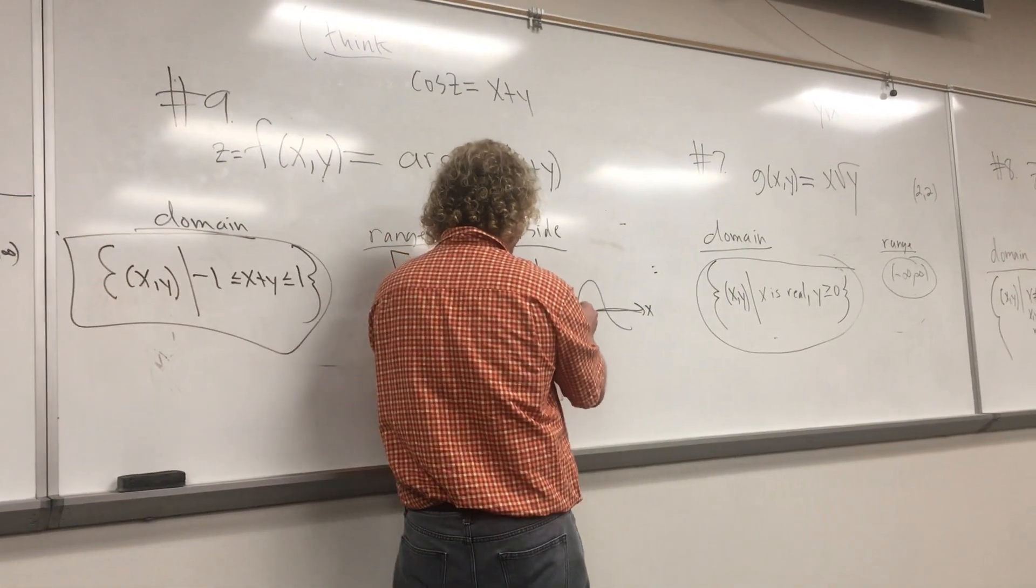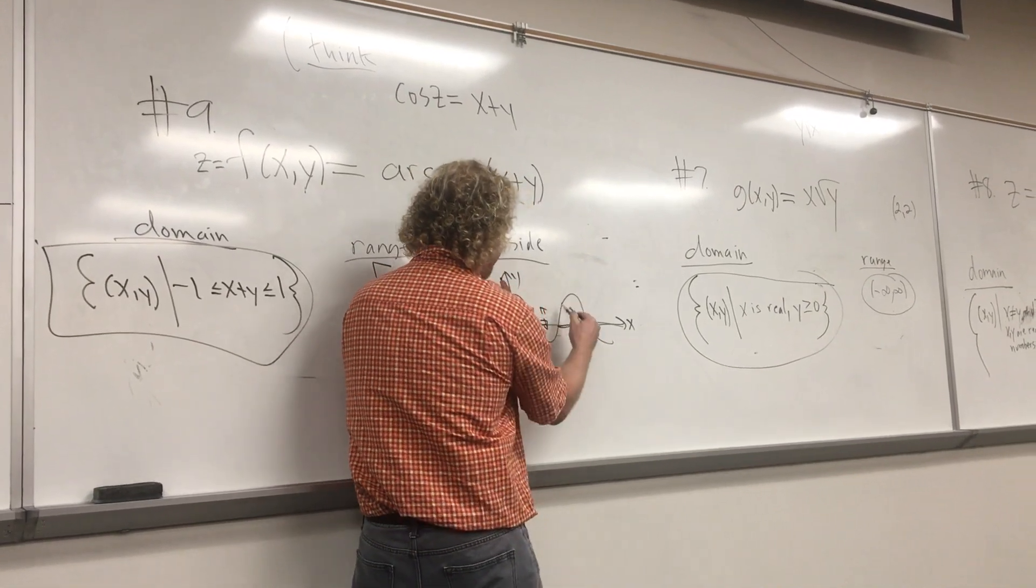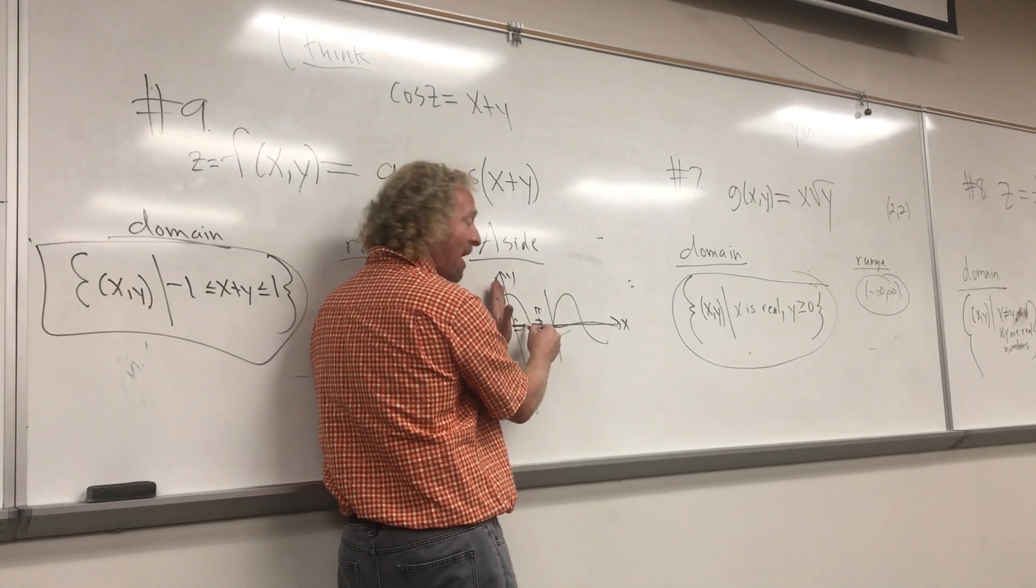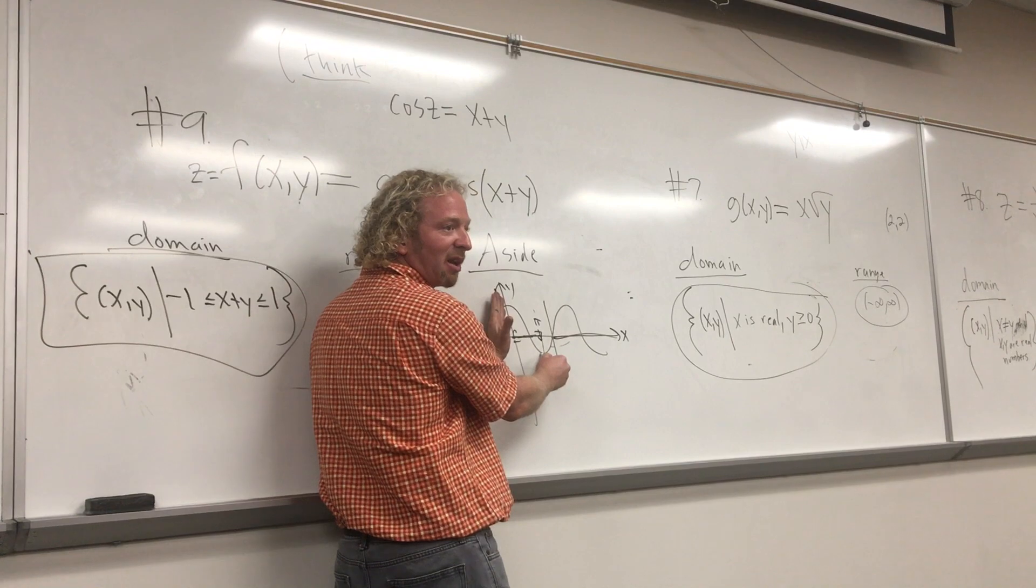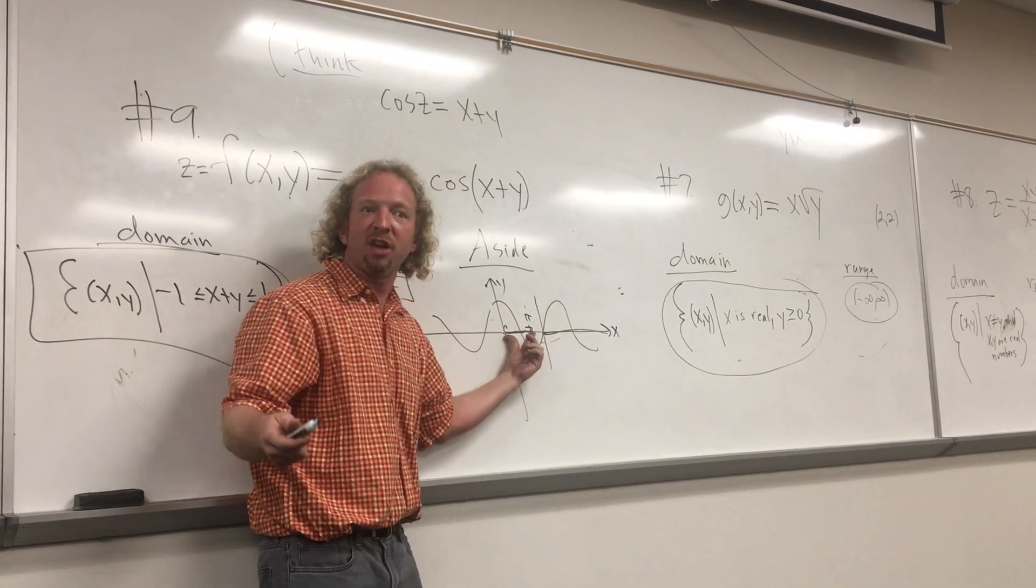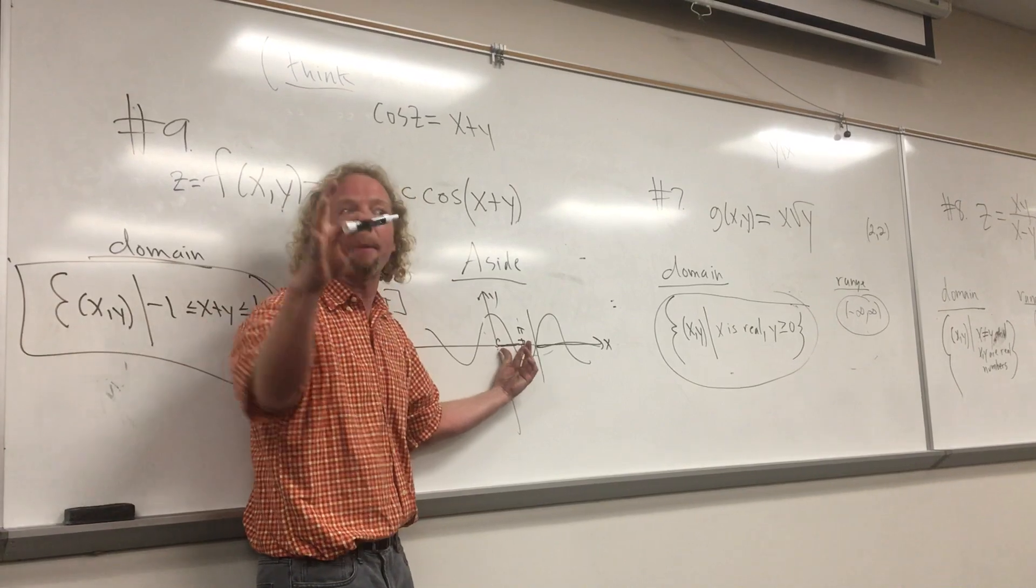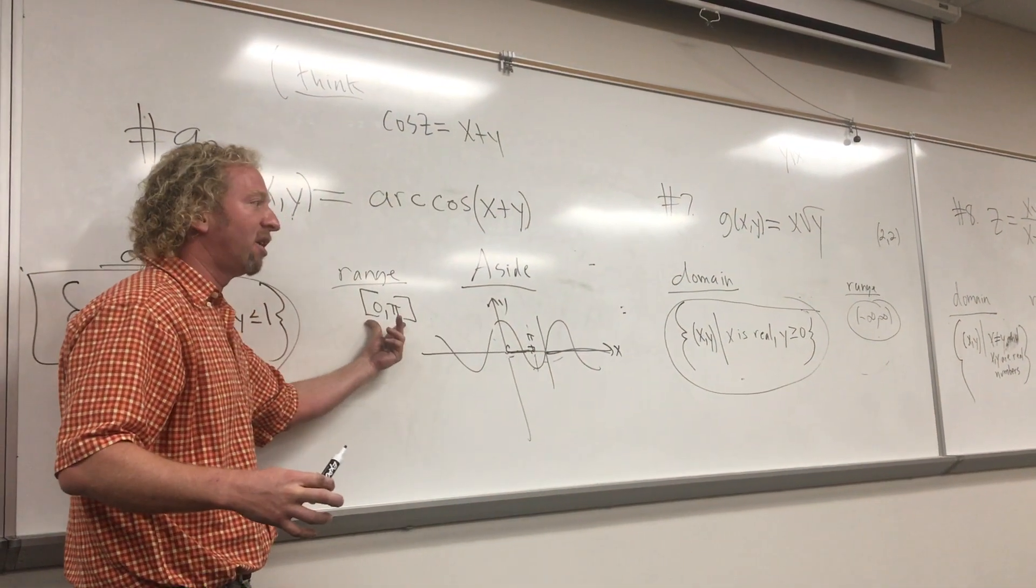So from zero to pi, just this piece here, it passes the horizontal line test. This is the domain of cosine, right? Where it passes the horizontal line test. So on this domain, cosine has an inverse. But remember, a function and its inverse swap domain and range. So the domain of cosine becomes the range of arc cosine.